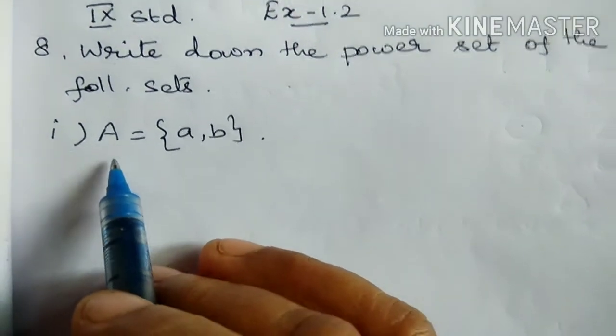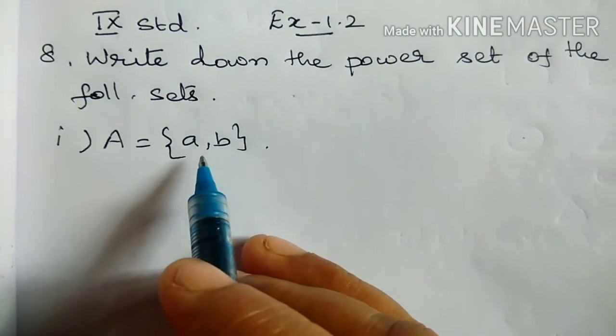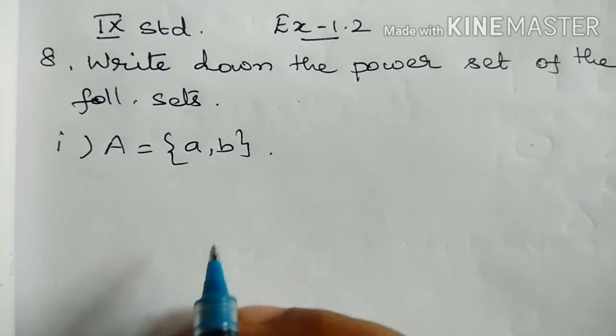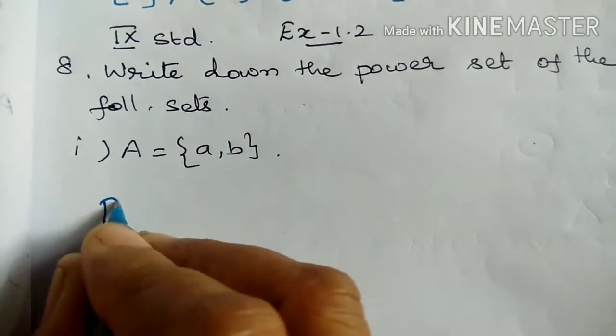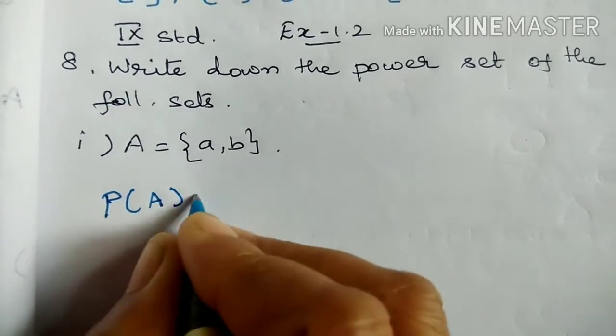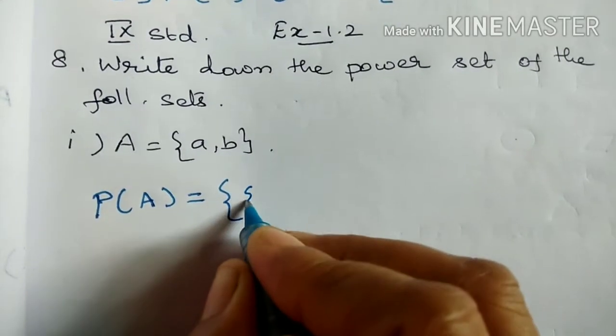First question, A equal to set {a, b}. How do you denote power set? P of A. First, where is null set?